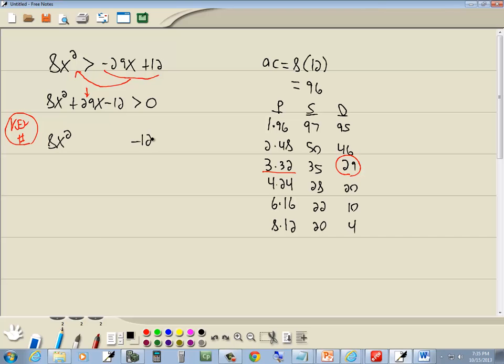Now remember with the key number, we rewrite our middle term using those two numbers. Our larger number in the difference column that we're using, which is 32, will always be the same sign as the middle term, which is positive in this problem. So plus 32x. Numbers in the difference column, d for different signs. So if 32 is positive, then 3 will be negative.